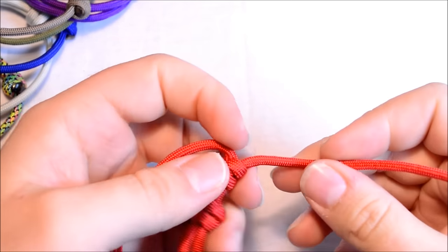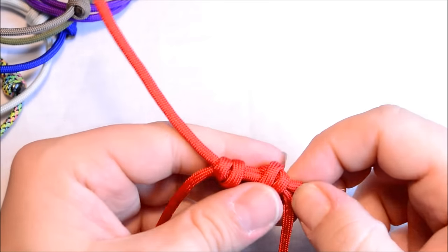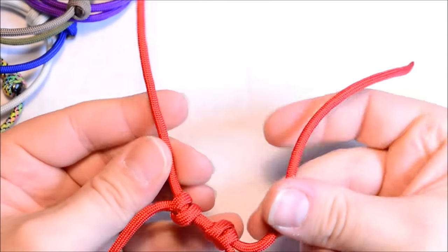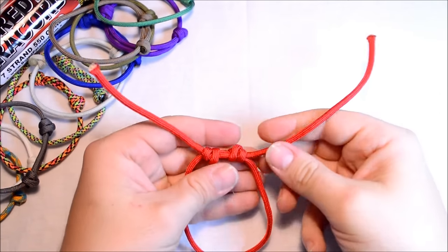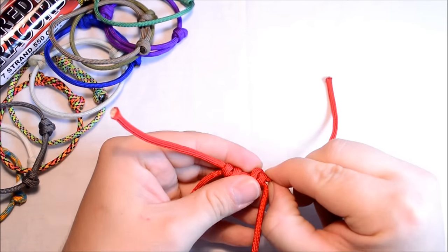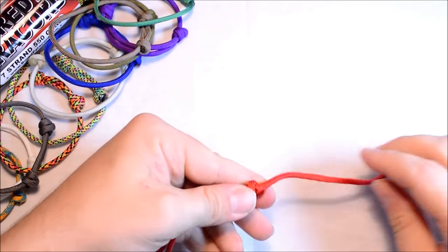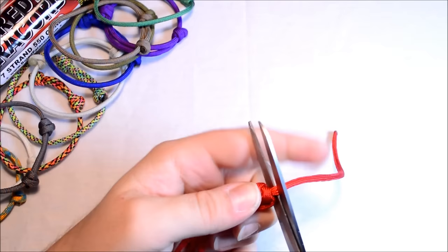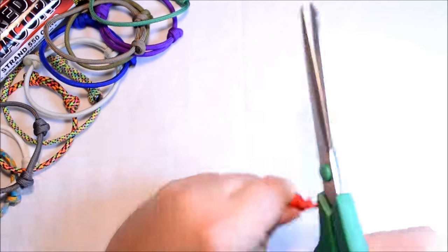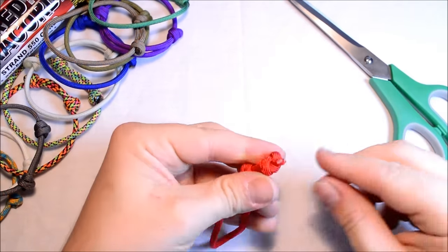To finish these, it's real simple. These working end cords don't move in and out of this knot, so if you cut it here and singe it, you don't have to worry about it going anywhere. I'm just going to cut this about an eighth of an inch away from the knot to give you just enough to singe.